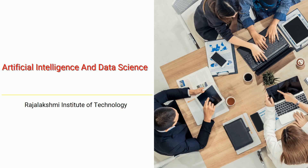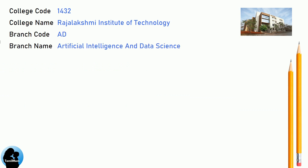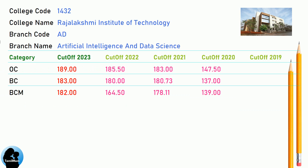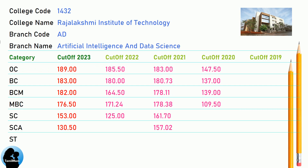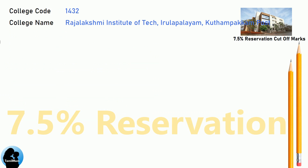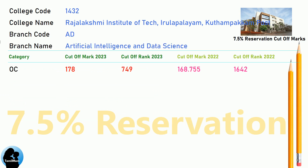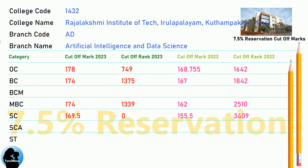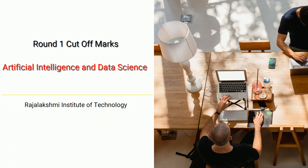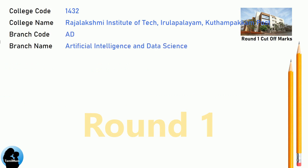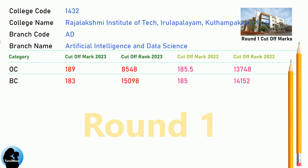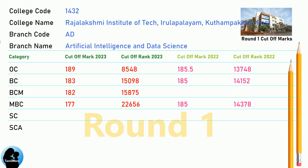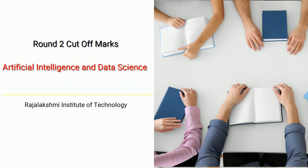DNA Cut-Off for Rajalakshmi Institute of Technology in Artificial Intelligence and Data Science. DNA 7.5 Reservation Cut-Off for Rajalakshmi Institute of Technology in Artificial Intelligence and Data Science. DNA Round 1 Cut-Off and DNA Round 2 Cut-Off for Rajalakshmi Institute of Technology in Artificial Intelligence and Data Science.